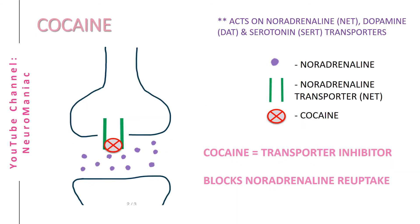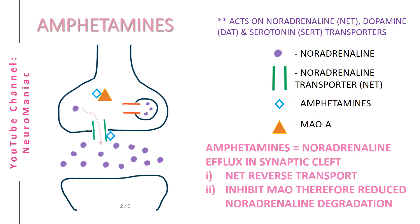Here I just wanted to quickly explain the effects of cocaine. This drug inhibits the transporter, therefore there is no reuptake of noradrenaline. Cocaine inhibits the noradrenaline, dopamine, and serotonin transporters.